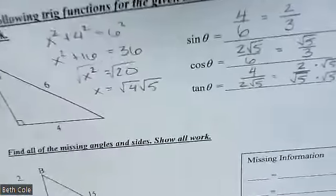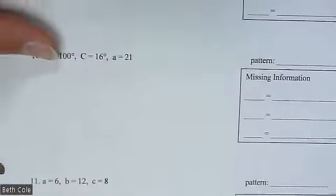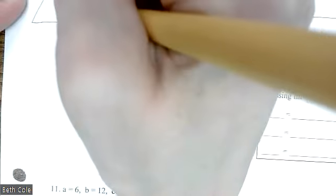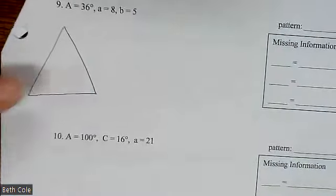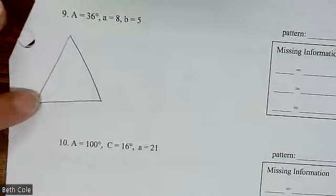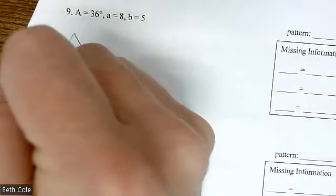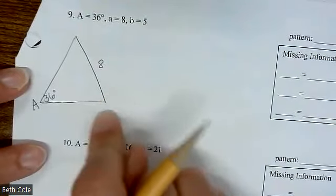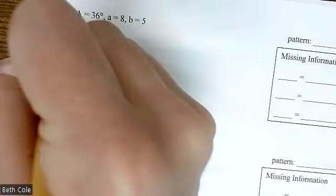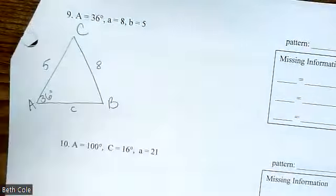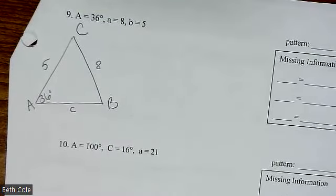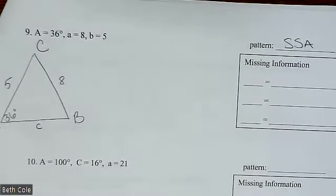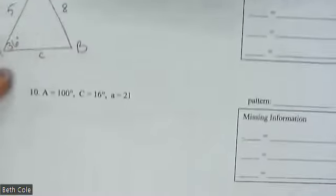For the rest of these, we'll draw all of them and state the patterns, then I'll do one of each kind. Draw a triangle — it doesn't need to be to scale. Start labeling at the bottom left corner. For problem 9: angle A is 36 degrees in the bottom left, across from that is side a = 8. Angle B goes here with side b = 5. Angle C goes at the top — we don't know anything about it. The pattern is side-side-angle.